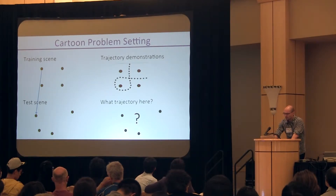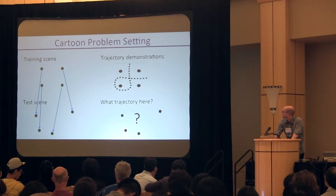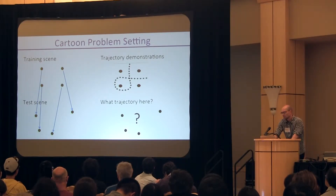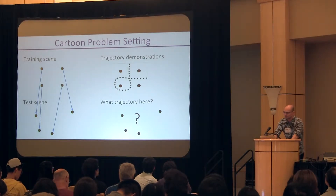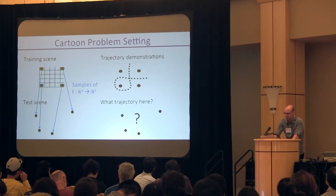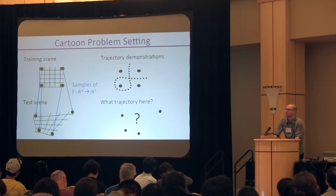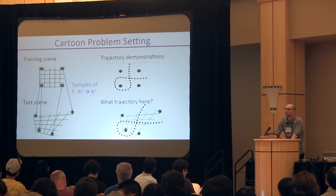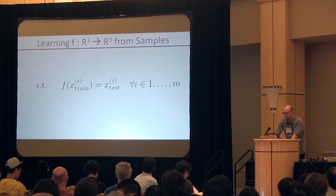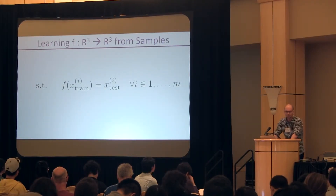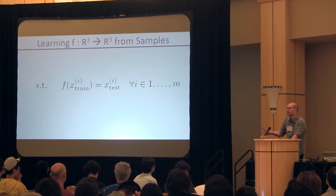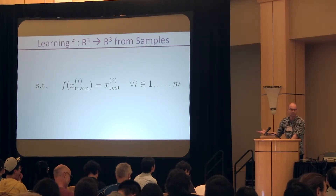We looked at the registration literature, which gives you algorithms to register scenes onto each other. What we do first is register the train scene onto the test scene, and then here's the novel part: we look at how to generalize this registration to the entire 3D space. These are just four samples of a function from R3 to R3 — let's learn the entire function. Once we learn the entire function, we can apply it to the trajectory and get a trajectory for the new situation. The question is, of the infinitely many functions that get the registration correct, which one do you pick as your generalization to the entire 3D space?